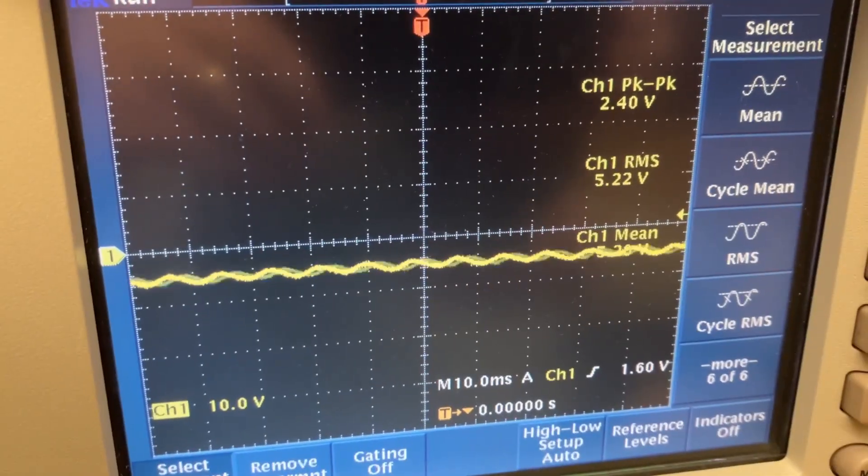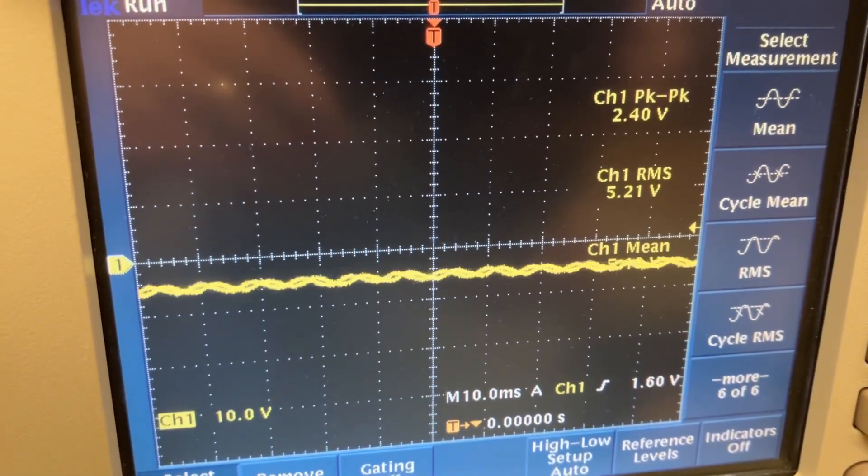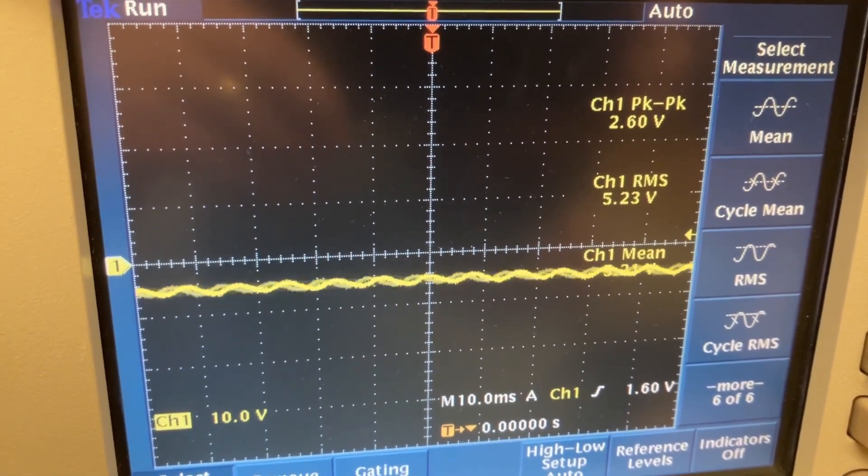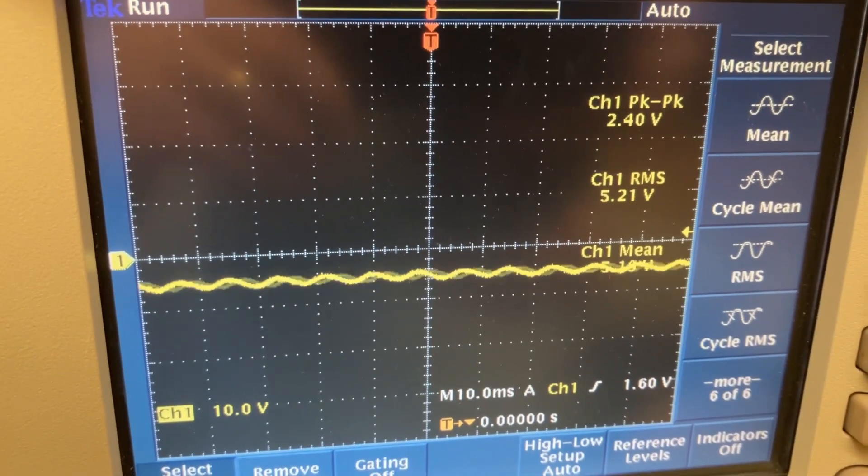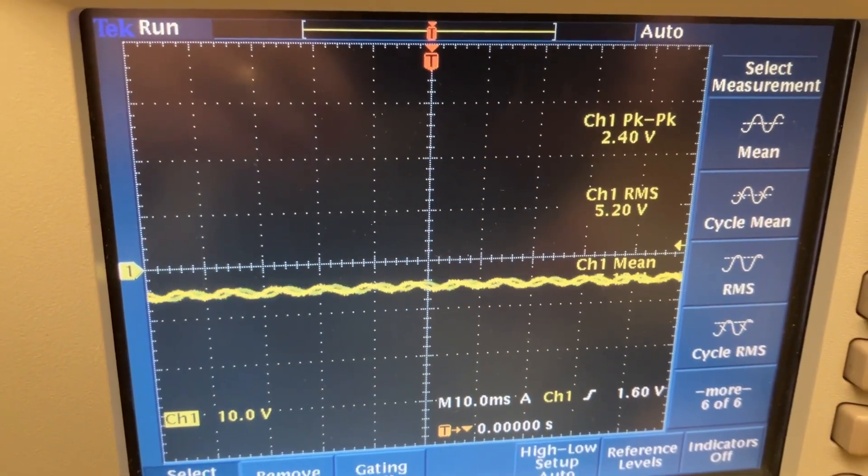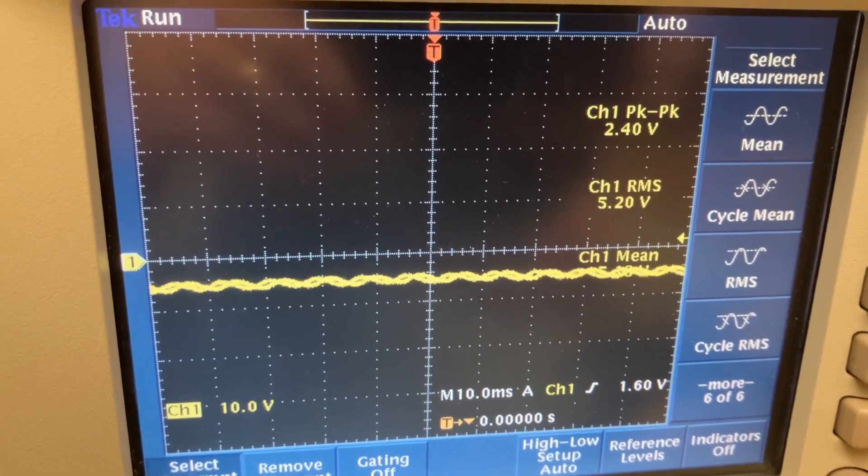That looks not good. So this is giving us a mean of minus 5 something. And we're getting a peak-to-peak voltage of 2.4 volts. So I suspect that that capacitor is dodgy.